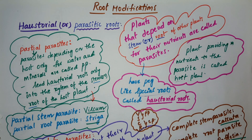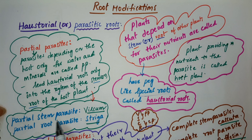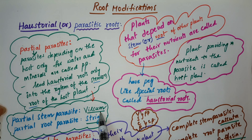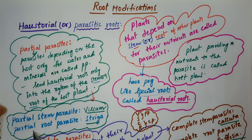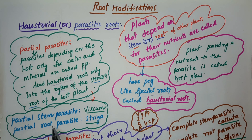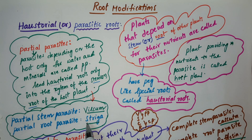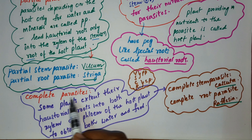Examples of partial parasites: Viscum is a partial stem parasite - it depends on the stem of the host plant. Striga is a partial root parasite - it depends on the root of the host plant.